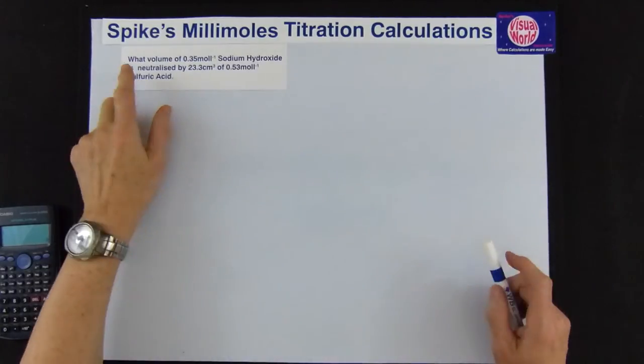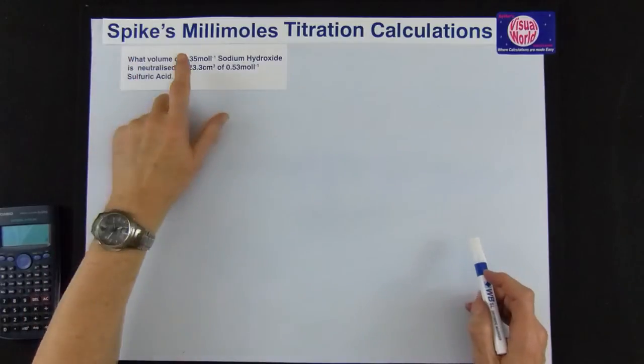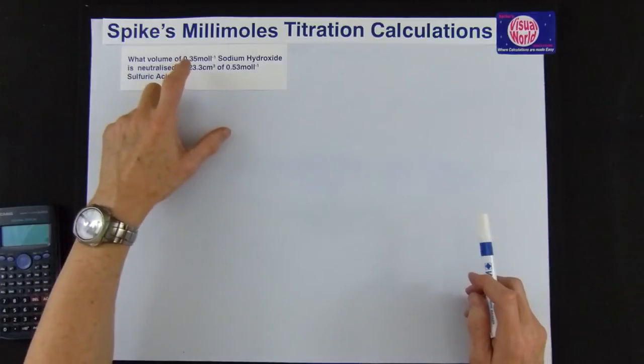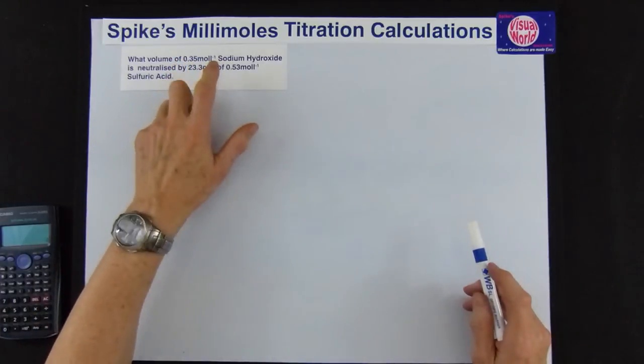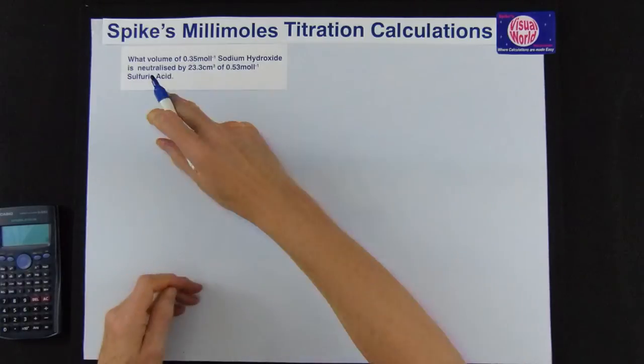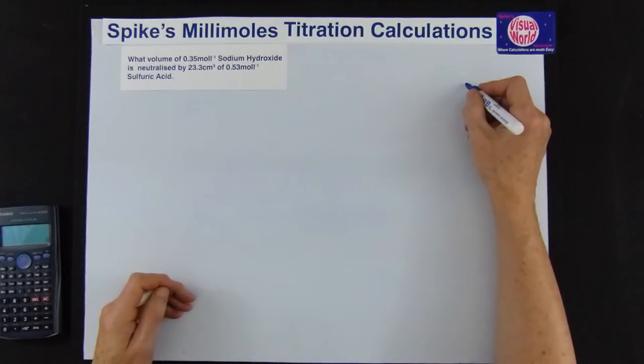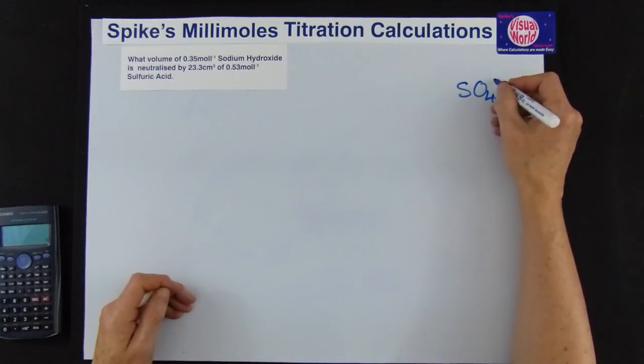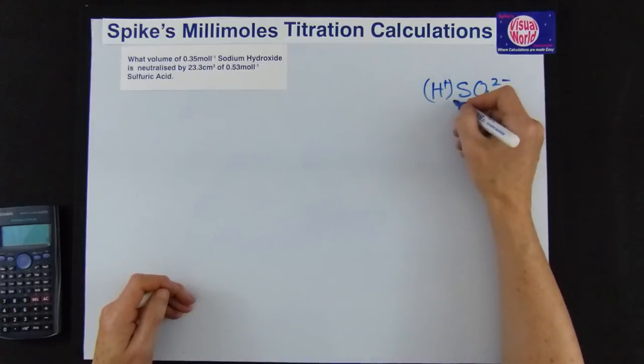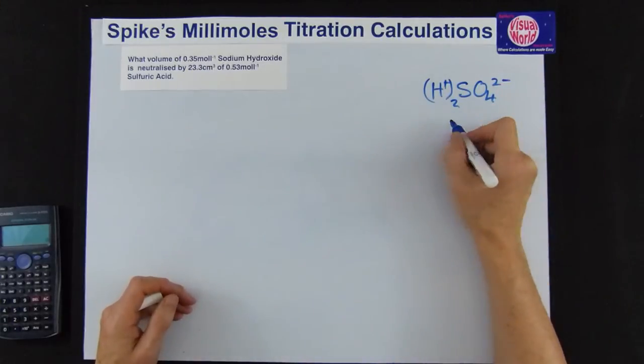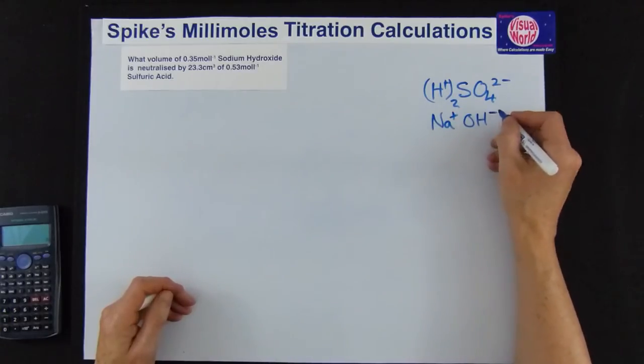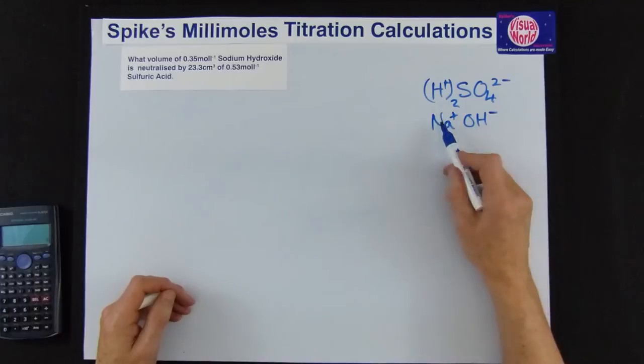The second example I'm going to show you is this one here which asks what volume of 0.35 moles per liter sodium hydroxide is neutralized by 23.3 cm³ of 0.53 moles per liter sulfuric acid. Again we'll just start with the acid so we know sulfuric makes sulfate so it's SO4²⁻ so we need 2 H+ so it's 2 for the H+ and we've got sodium hydroxide Na⁺ OH⁻ and that's already balanced so it's 1 OH⁻.